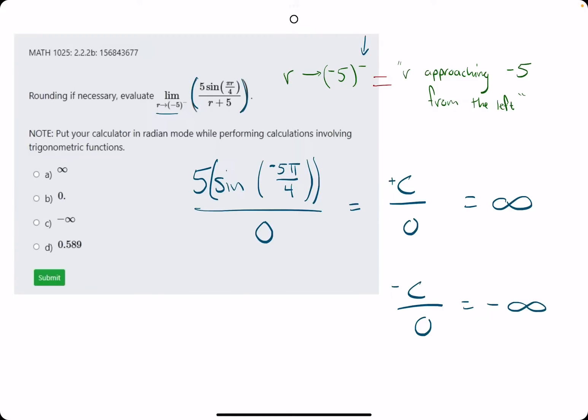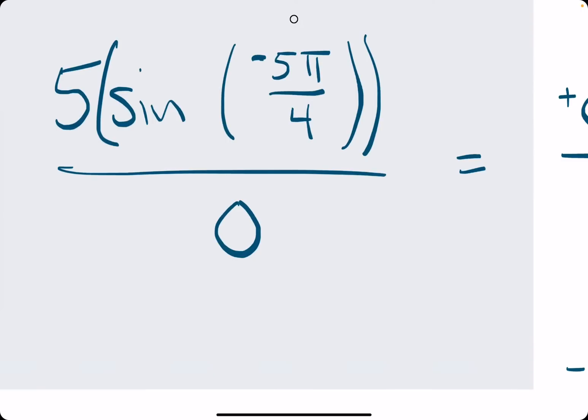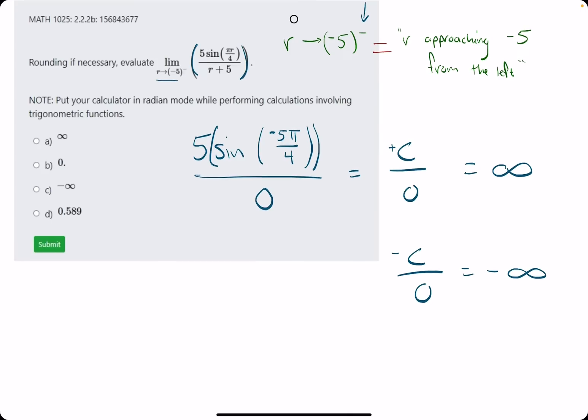But there's even more of a twist. If the 0 is positive or negative, that can also affect whether we get positive or negative infinity. So we need to consider that we are approaching negative 5 from the left. Let's think about a number line.